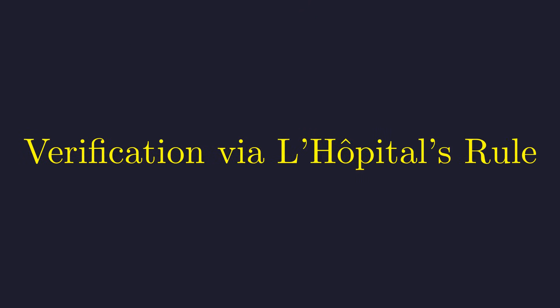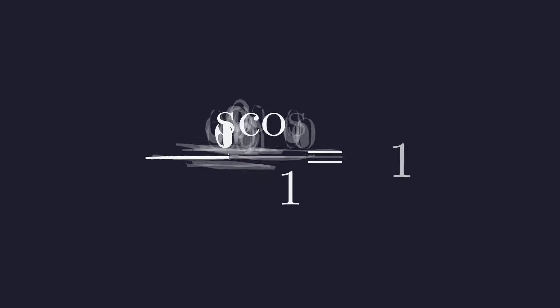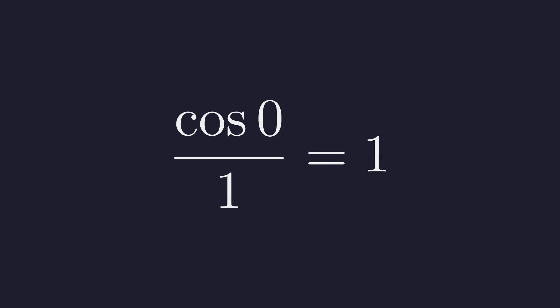Now that we've proven the limit from first principles, we can use L'Hôpital's rule as a quick verification. Note: using this as the primary proof is circular reasoning, because the derivative of sine itself depends on this very limit. Since the limit is of the form zero over zero, we take the derivative of the top and bottom. The derivative of sine of x is cosine of x, and the derivative of x is 1. Plugging in zero, we get cosine of zero over 1, which is 1. This confirms our rigorous proof.